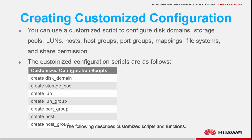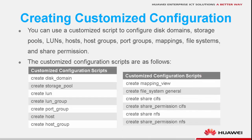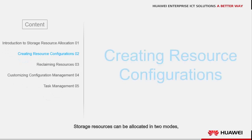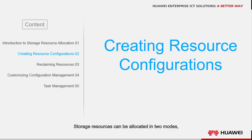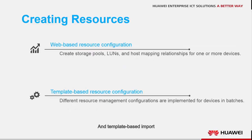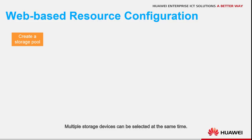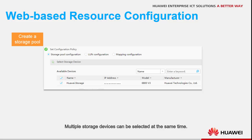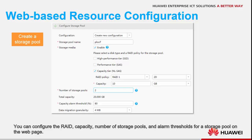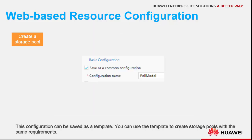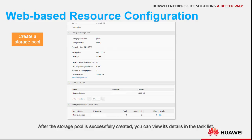The following describes customized scripts and functions. Storage resources can be allocated in two modes: web-based creation and template-based import. Set the task name and description to identify the task on eSight. Multiple storage devices can be selected at the same time. You can configure the RAID, capacity, number of storage pools, and alarm thresholds for a storage pool on the web page. This configuration can be saved as a template, and you can use the template to create storage pools with the same requirements. After the storage pool is successfully created, you can view its details in the task list.